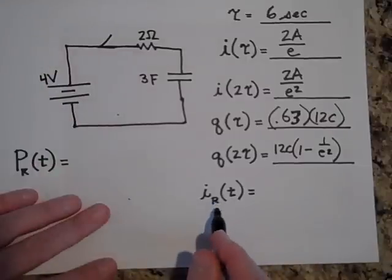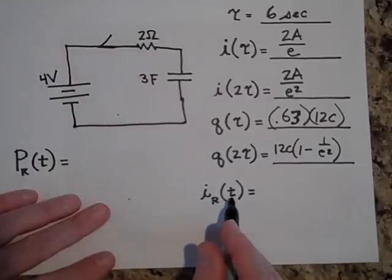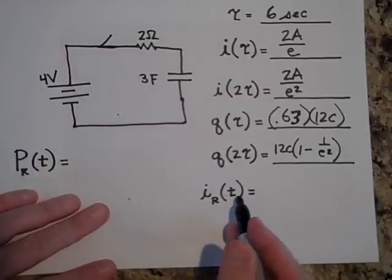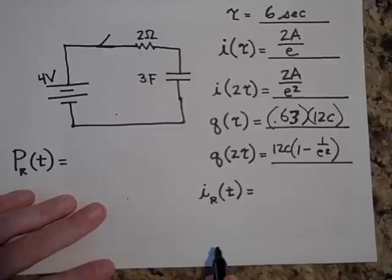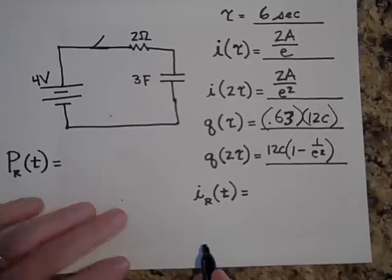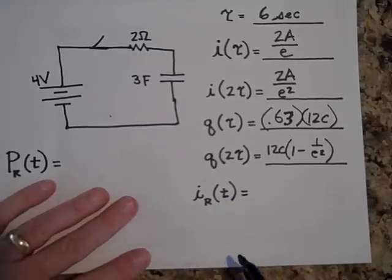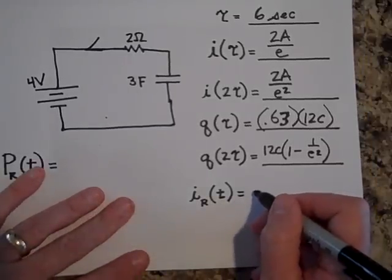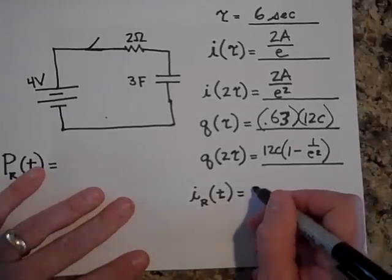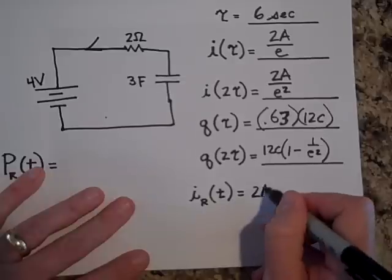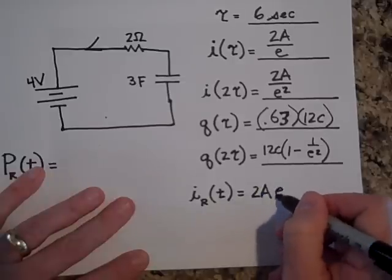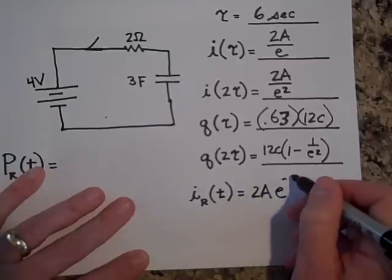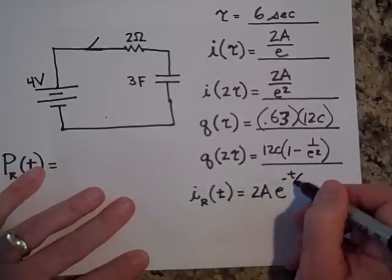What will be the current through the resistor as it changes with time? The current through the resistor as it changes with time is going to be I-naught, which is 2 amps, times e to the negative t over RC.